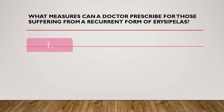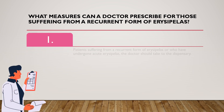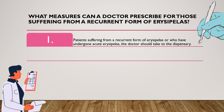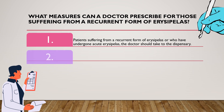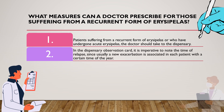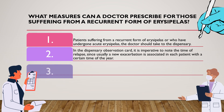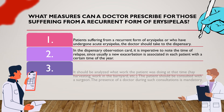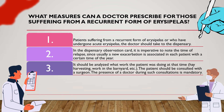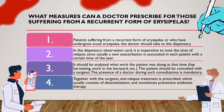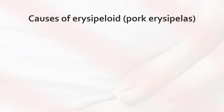What measures can a doctor prescribe for patients suffering from a recurrent form of erysipelas? Patients with recurrent erysipelas or who have undergone acute erysipelas should be placed under dispensary observation. In the dispensary card it is imperative to note the time of relapse, since usually a new exacerbation is associated with a certain time of year for each patient. It should be analyzed what the patient was doing at that time. The patient should be consulted with a surgeon. Anti-relapse treatment is prescribed, which usually consists of desensitization and sometimes preventive antibiotic therapy.